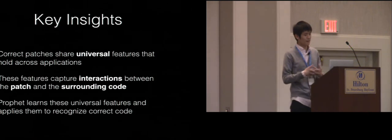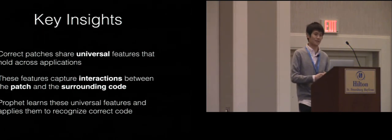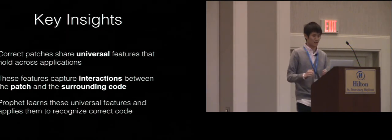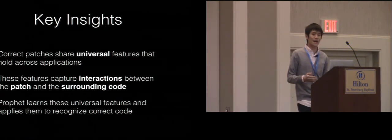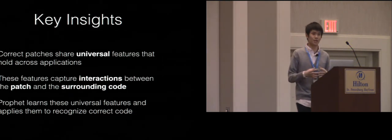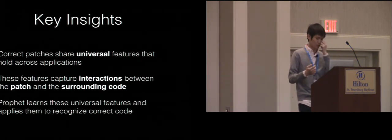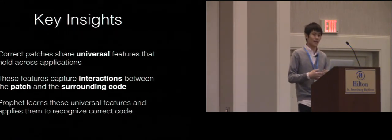The key insights of Profit are the following. Correct patches share universal features that hold across applications. We found that we can learn universal features from one set of applications and apply that learned knowledge to another set. These useful features typically capture interactions between the patch and the surrounding code. To learn useful information, we should not just focus on the patch code itself — we need to look at the interactions between the patch and the code.